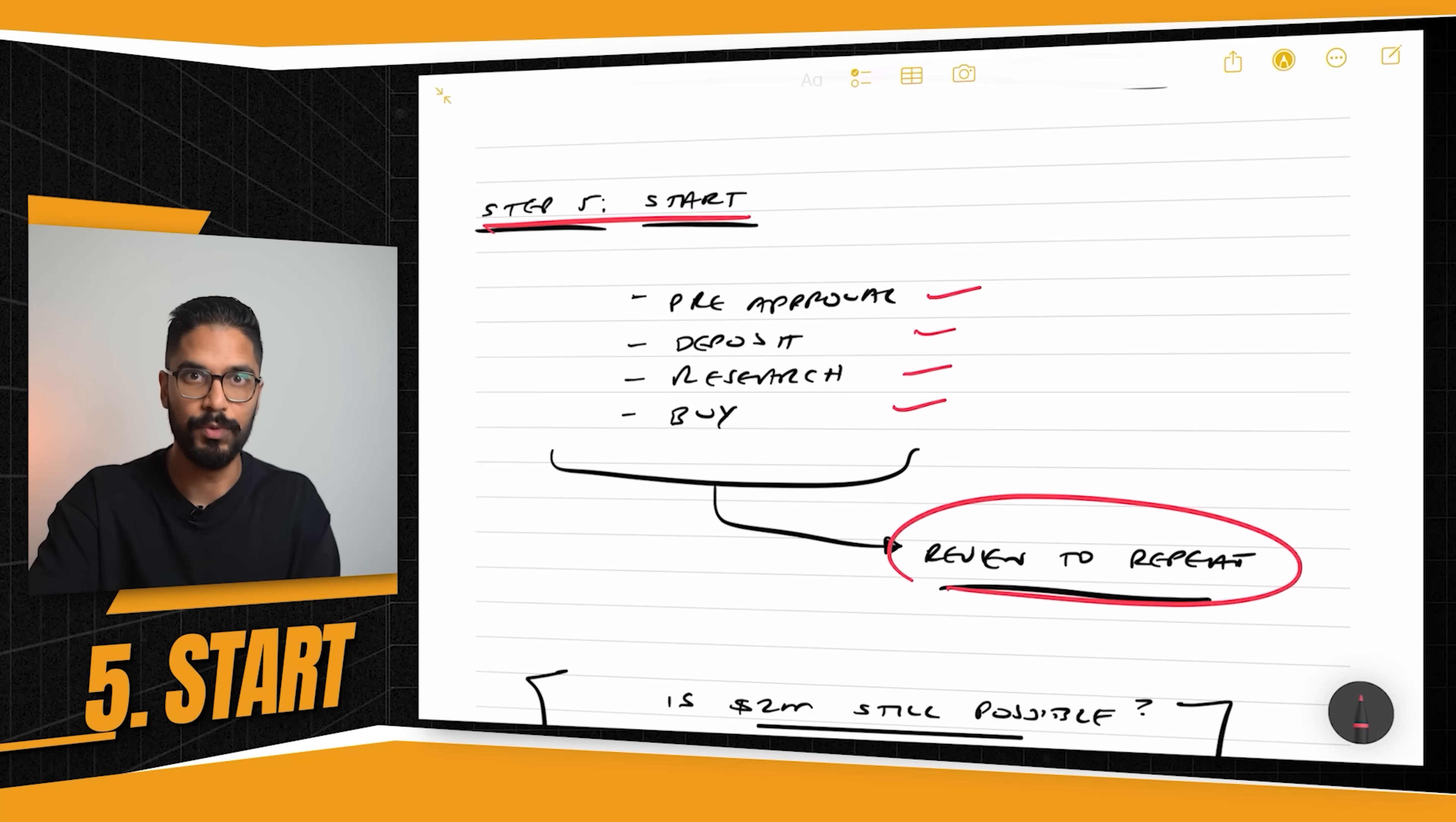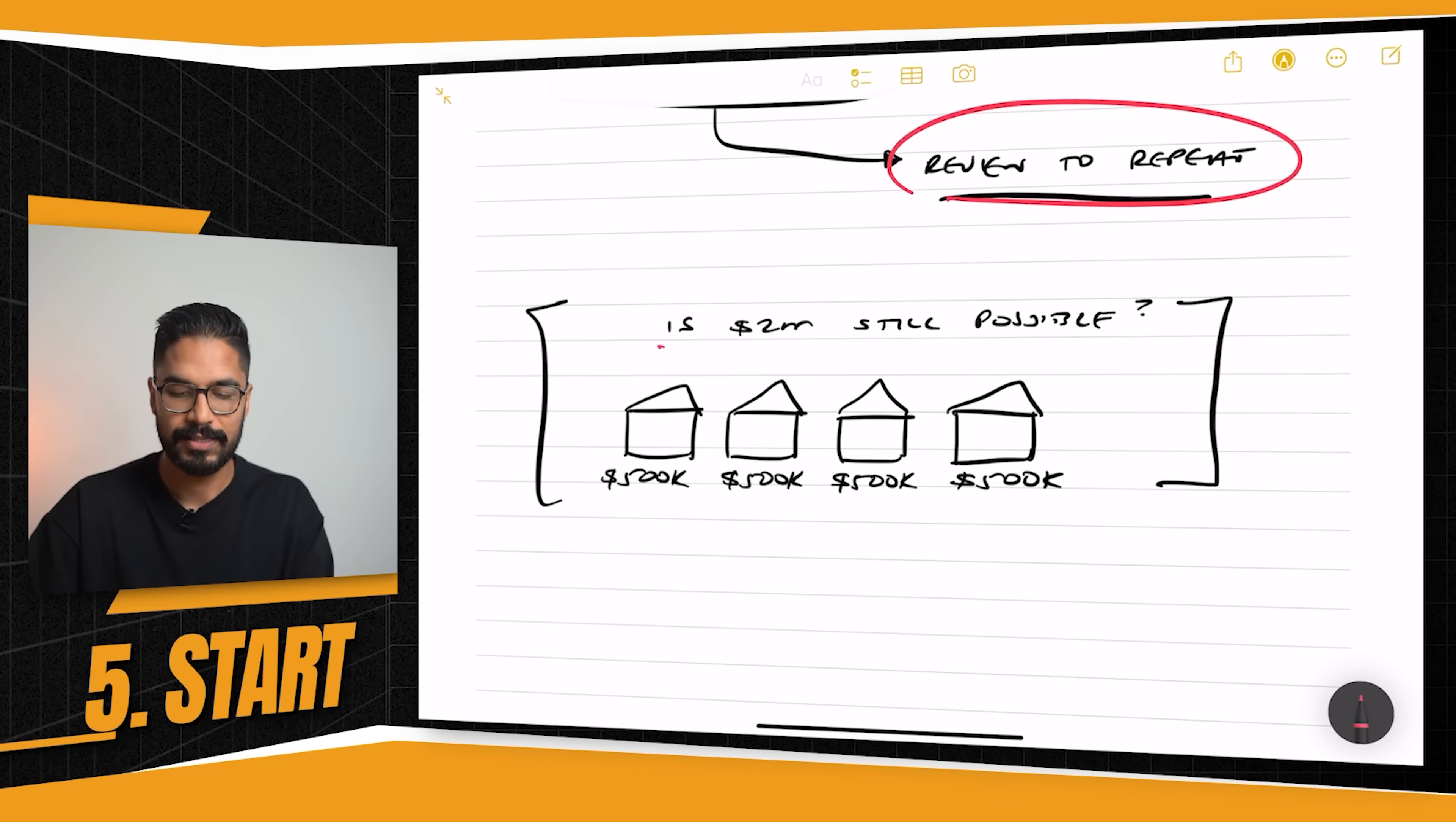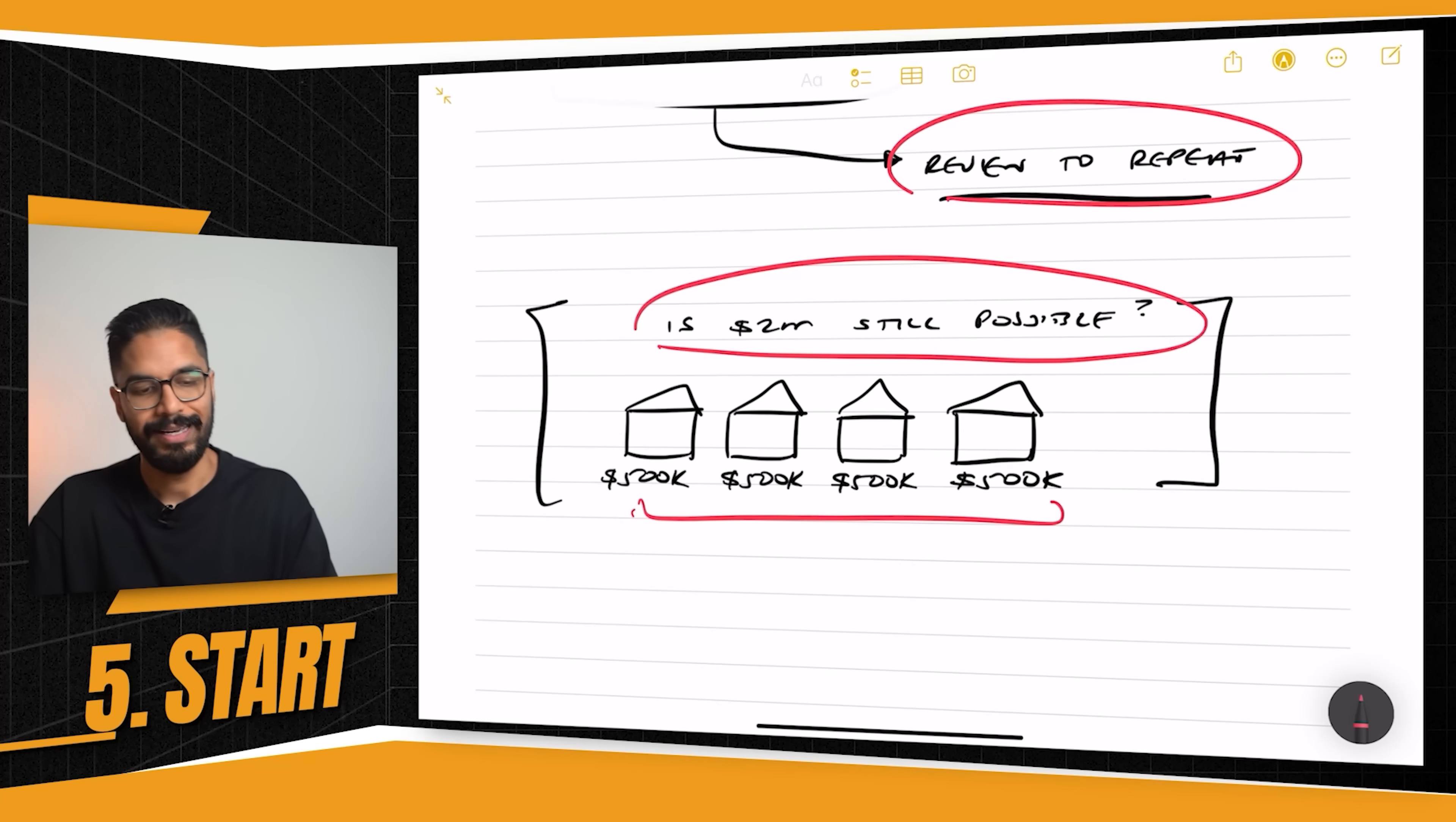So just think about how much time it would take for you to do it and do it with confidence. Now, the question I get asked sometimes is, Ravi, is it still possible to get a $2 million portfolio? And that would be, say, four properties at $500,000 each. In 2024, it is still possible.